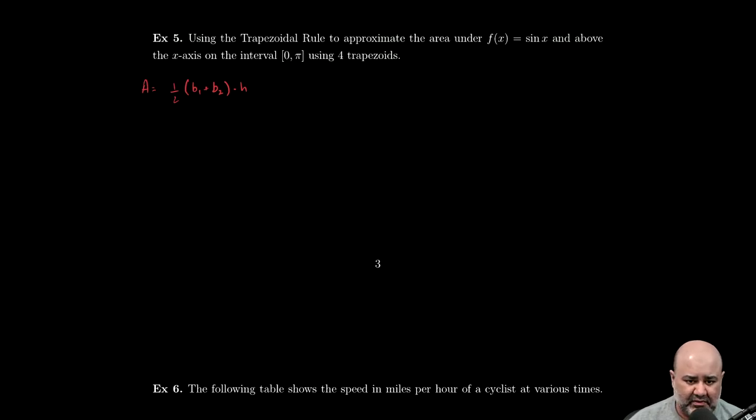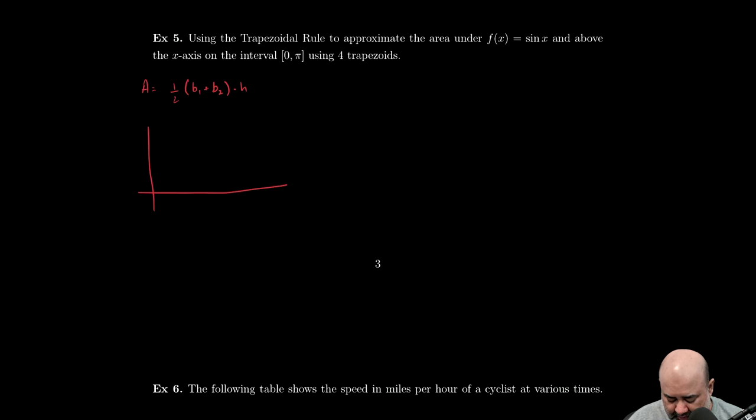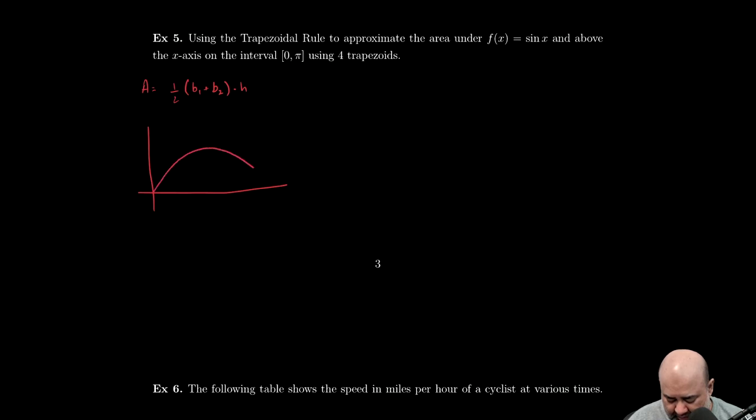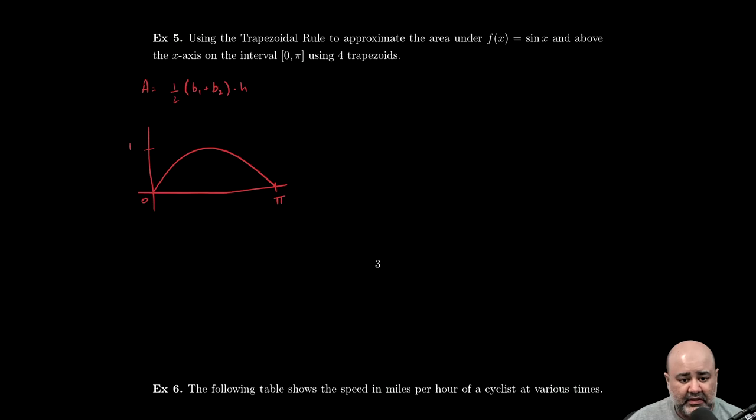So four trapezoids is sort of like saying four subdivisions. Always a good idea to draw the graph of the function you're playing with. So sine x from zero to π would just be this piece. This is π, range is negative one to one, so zero to one sits there.